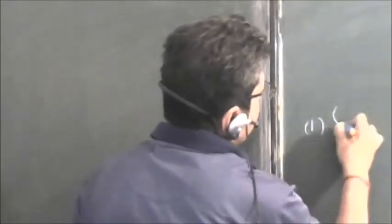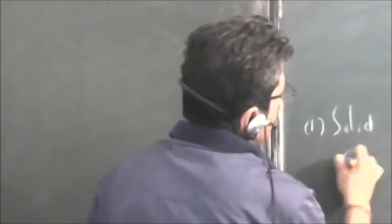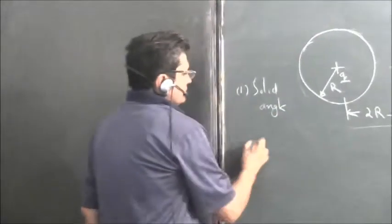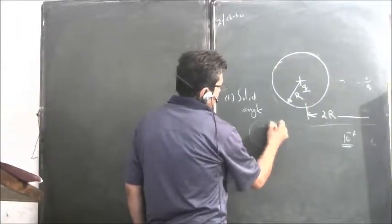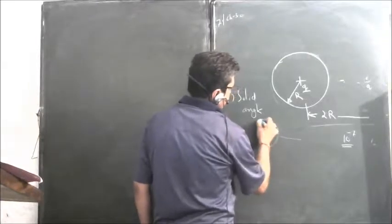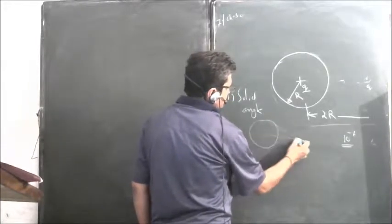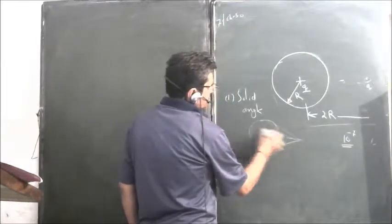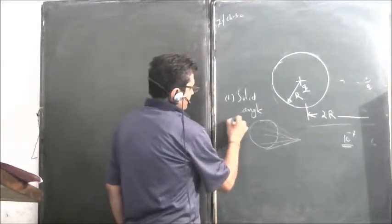Now before we do that, we should know two things. First, what is the solid angle? The solid angle of any closed surface made by an exterior point is zero.